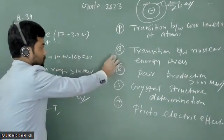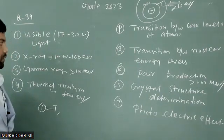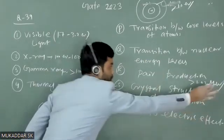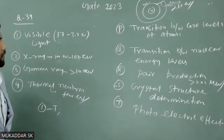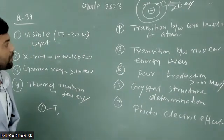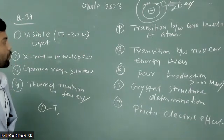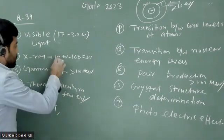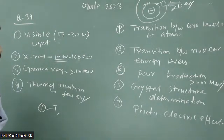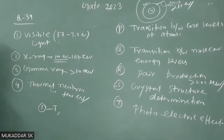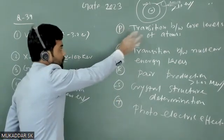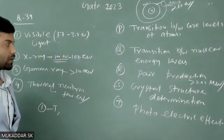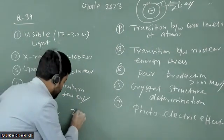X-ray also cannot do the transition between nuclear energy levels because that also requires mega electron volt energies. However, for heavy elements, the transition between core levels requires energy values that fall within the x-ray range. So for heavy elements, x-ray can perform inner core atomic level transitions. In summary, x-ray can do the photoelectric effect, crystal structure measurement, and transition between core levels of atoms — especially for heavy elements.